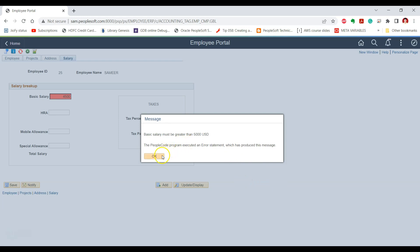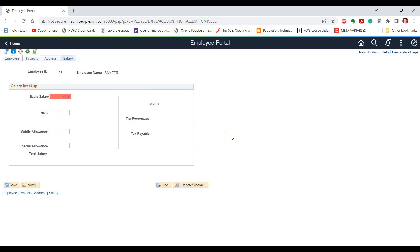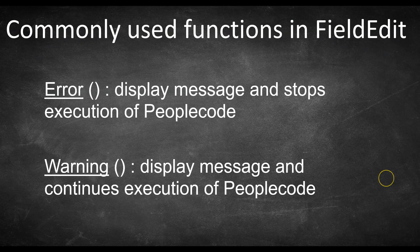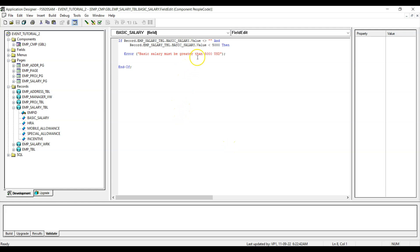Whenever we have such a requirement, we can write the validation PeopleCode using the FieldEdit event. When it comes to writing validation logic in the FieldEdit event, there are two functions most commonly used: the Error function and the Warning function. The Error function displays an error message to the user and after displaying the message, it halts or stops further execution of PeopleCode. The Warning function displays a warning message to the user but does not stop further execution of PeopleCode. In our use case, to validate the basic salary, we use the Error function.